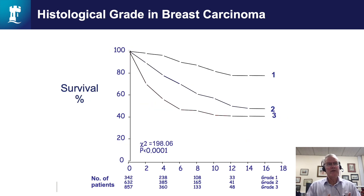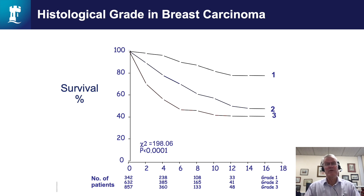If you summate those scores you get an overall grade score, producing grades of one, two, and three. The survival curve shows the behavioural characteristics. On the left you can see survival from 100% to zero, and along the bottom the number of years patients have been followed up. At the 10-year point, just under 50% of grade three patients have survived, whereas about 90% of grade one patients have survived. So there's a huge difference in potential survival at 10 years between grade one and grade three breast cancer patients.